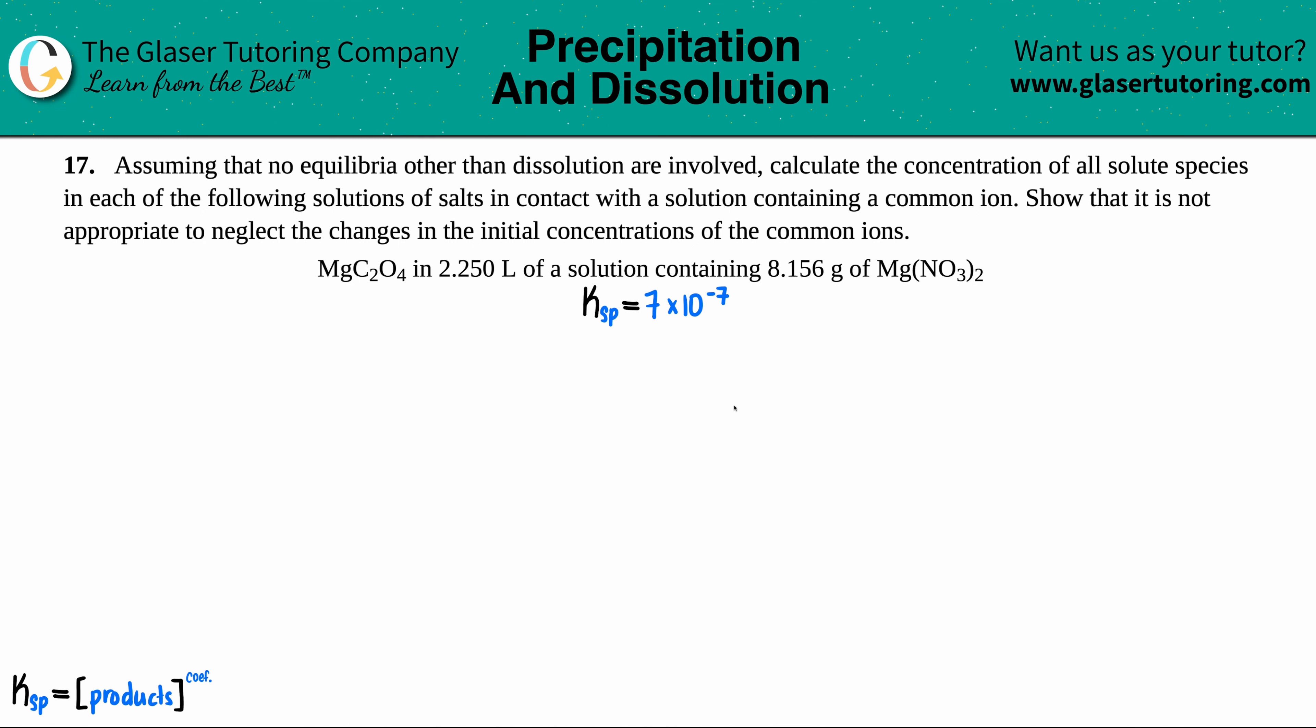Number 17. Assuming that no equilibria other than dissolution are involved, calculate the concentration of all solute species in each of the following solutions of salts in contact with a solution containing a common ion. So KSP problem, right?